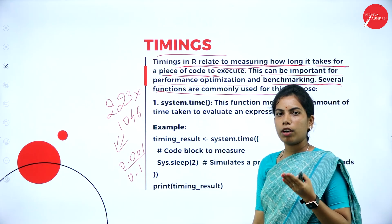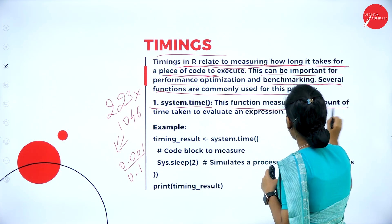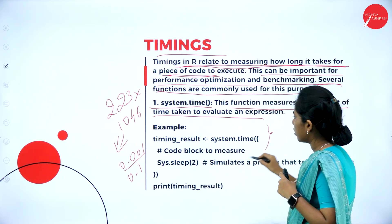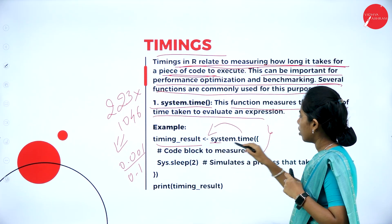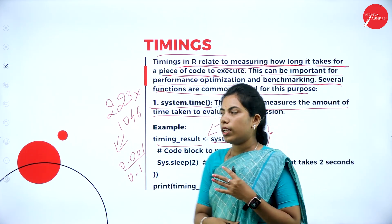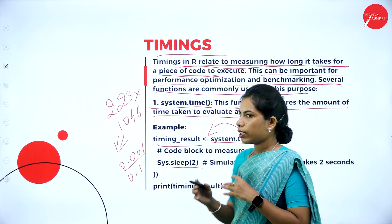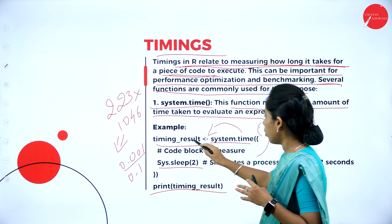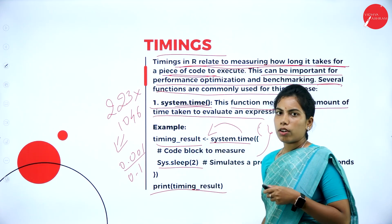The first timing function is system.time, which measures the amount of time taken to evaluate an expression. All function names should be in small letters. For example: timing_result = system.time({ Sys.sleep(2) }). When the sleep timing reaches 2 seconds, the system stops automatically. Printing the result shows the timing of whatever code was measured using system.time.